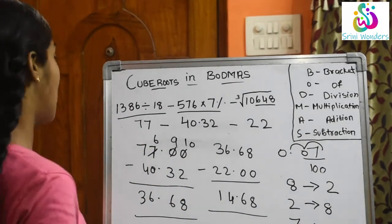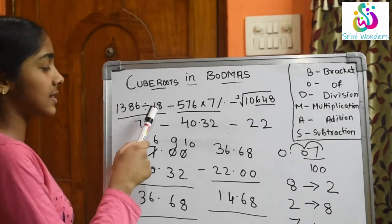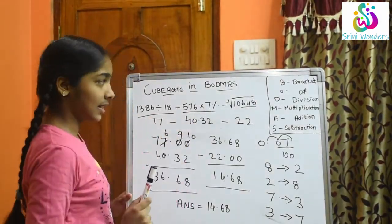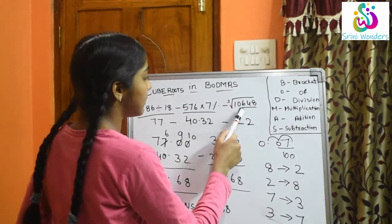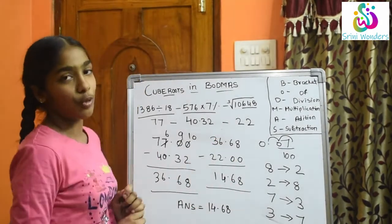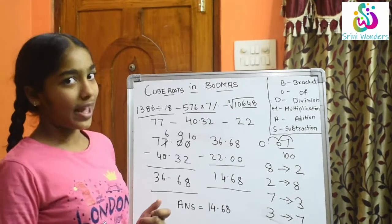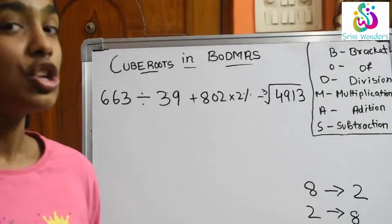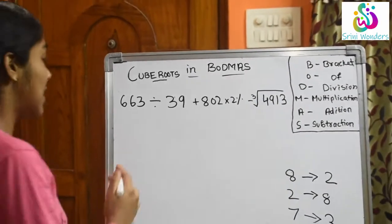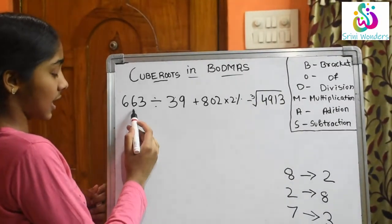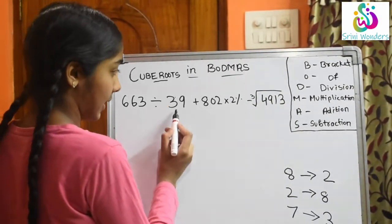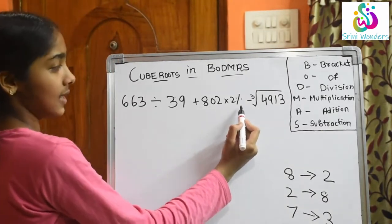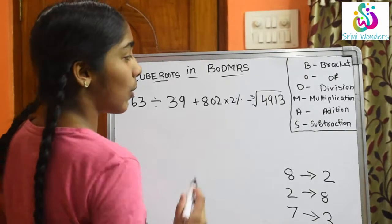So like this we solve. 1386 divided by 18, minus 576 into 7%, minus the cube root of 10648 gives the answer 14.68. Now let us take one more example: 663.663 divided by 39, plus 802 into 2%, less the cube root of 4913.